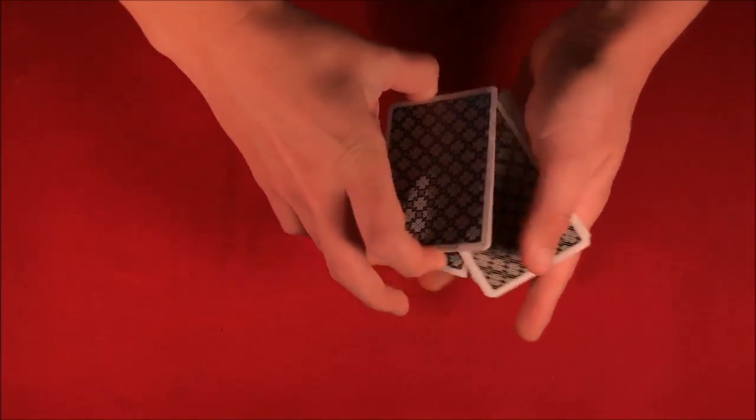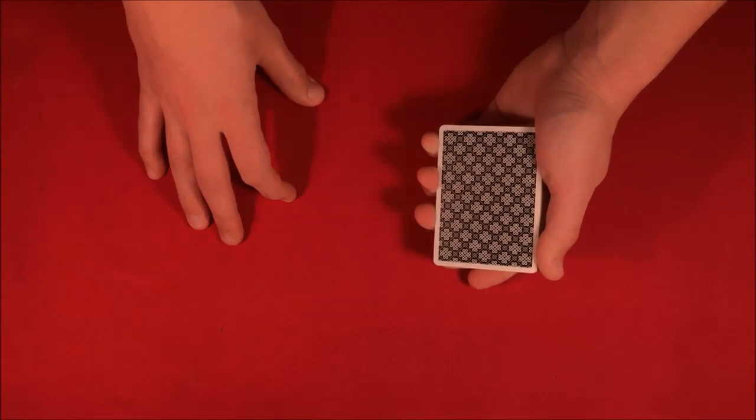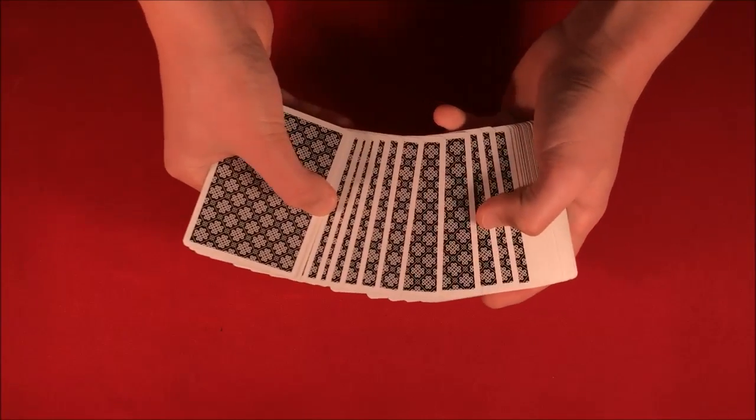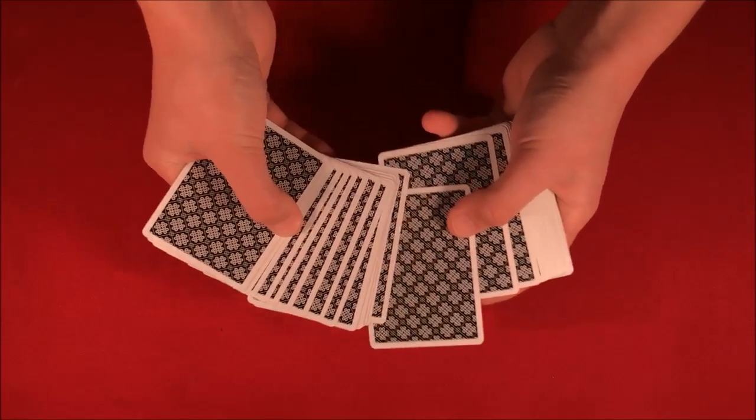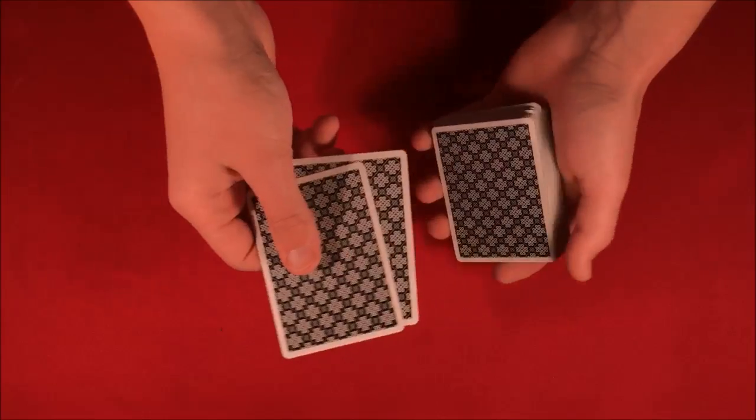Then we're going to take your ace and do the same thing, lose it into the middle of the deck. The whole premise of this trick is, as you can see, the cards are lost in the deck. What I want you to do is you can find them yourself by picking two cards at random.